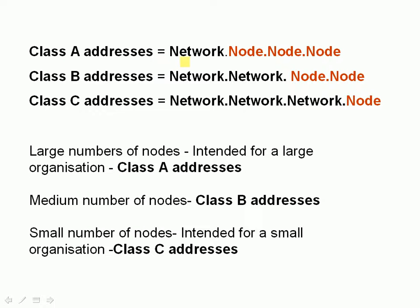A class A address is divided into network, node, node, node — which is eight bits for the network and 24 bits for the node. A class A address was allocated to large organizations. There won't be many large organizations, but they would have lots of node addresses. You've got a limited number of networks — 256 — but you've got lots of nodes, 2 to the 24, which is a lot.